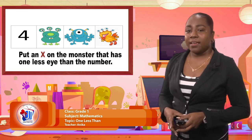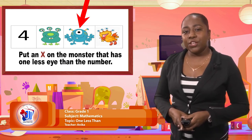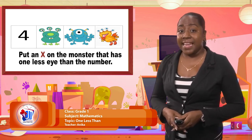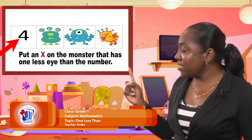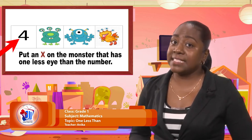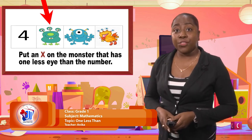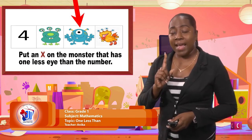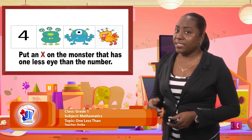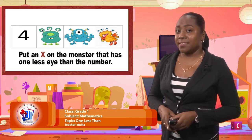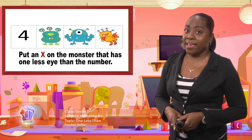On the screen you're going to see a number. Then we have pictures with three Munsters. I would like you to look at the pictures carefully and then I'm going to ask you to put an X on the Munster that has one less eye than the number. So since the number is four we have to look at each Munster and see which one of them has one less than four eyes.